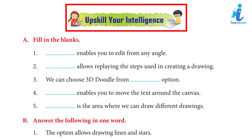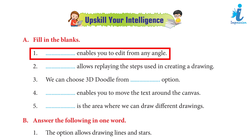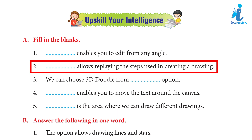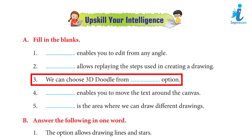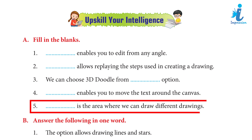Upscale your intelligence – Fill in the blanks: 1. Dash enables you to edit from any angle. Answer: 3D view. 2. Dash allows replaying the steps used in creating a drawing. Answer: History slider. 3. We can choose 3D Doodle from dash option. Answer: Paint 3D. 4. Dash enables you to move the text around the canvas. Answer: 3D text.